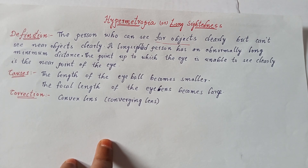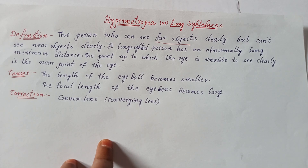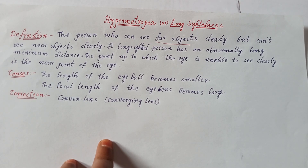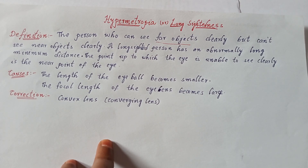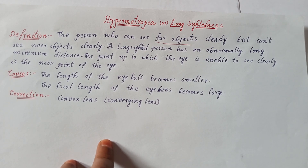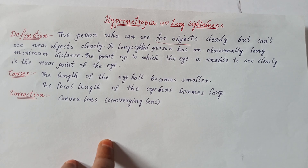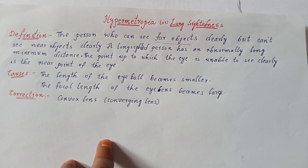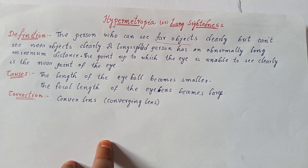In this video also, we will see in the same way: definition of hypermetropia, causes, correction, and the ray diagrams of hypermetropia to write in your board exam. It is a very important question for class 10 students. Watch completely so you will understand hypermetropia in detail and get full marks. It is asked so many times in the exam. If you haven't watched myopia, I will give a link in the description — either myopia or hypermetropia can come in your exam as a long answer from the chapter 'Human Eye and the Colorful World.'